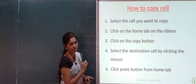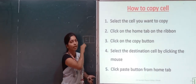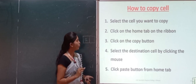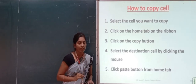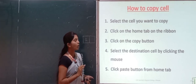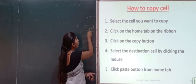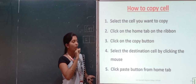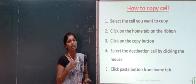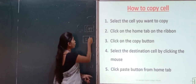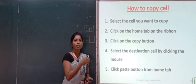We will see the steps one by one. First, select the cell you want to copy. Then click on the Home tab on the ribbon. Then click on the Copy button — there is an option called Copy there. Then select the destination cell by clicking the mouse, which is the cell where you want your copied data to go.